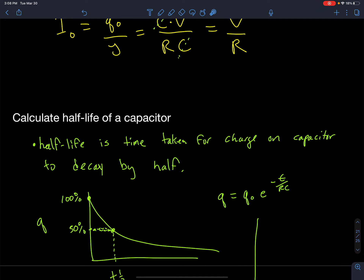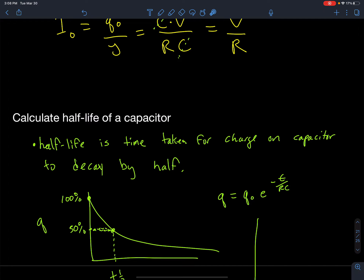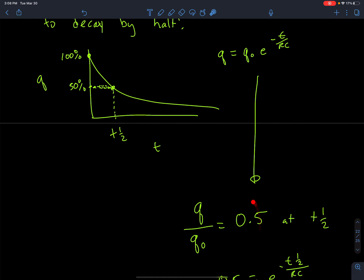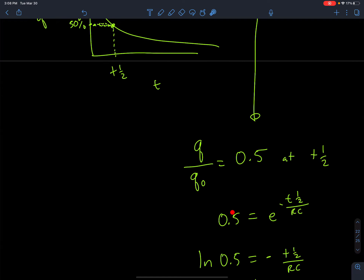Another thing we can do is calculate half-life. Similar to nuclear physics, the half-life of a capacitor is the time taken for the charge to decay to half its value — that 50% point. I can plug that into the Q equation where Q over Q₀ equals 0.5, so 0.5 = e^(-t½/RC).